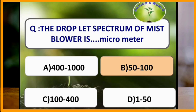The droplet spectrum of a mist blower is 5 to 200 micrometers.